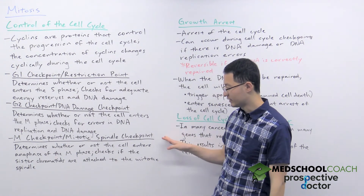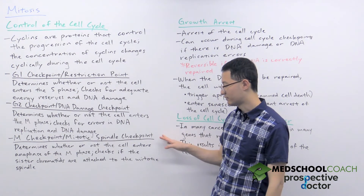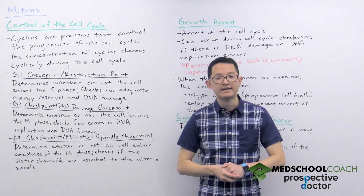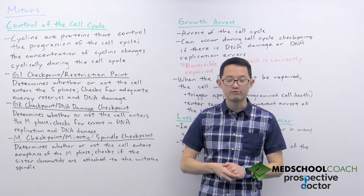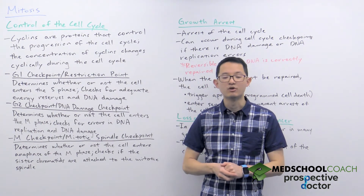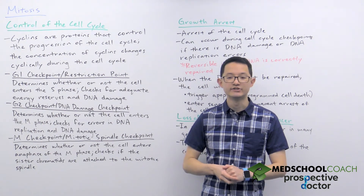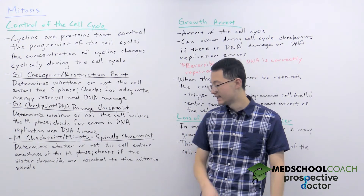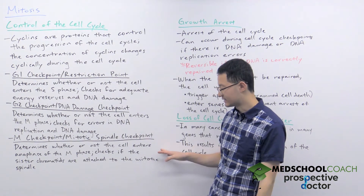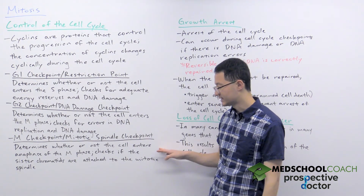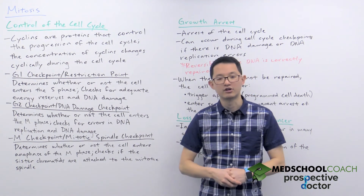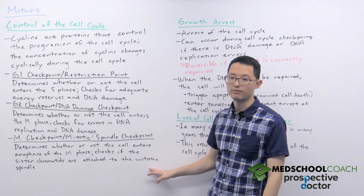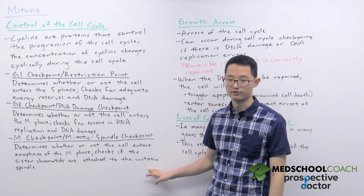The third checkpoint is the M checkpoint, which is also called the mitotic spindle checkpoint. This determines whether the cell will proceed into anaphase of the M phase, and it is checking to see if the sister chromatids are correctly attached to the mitotic spindle.